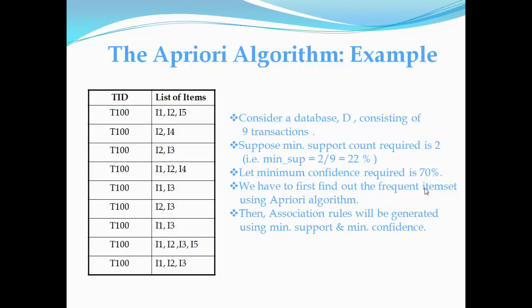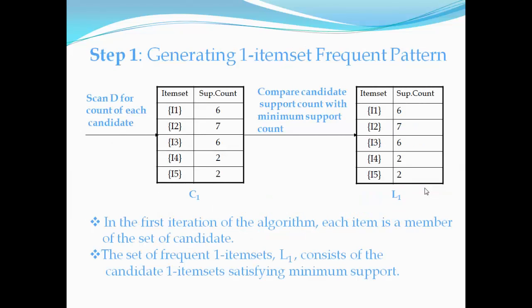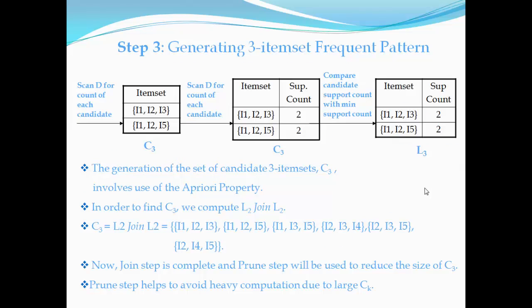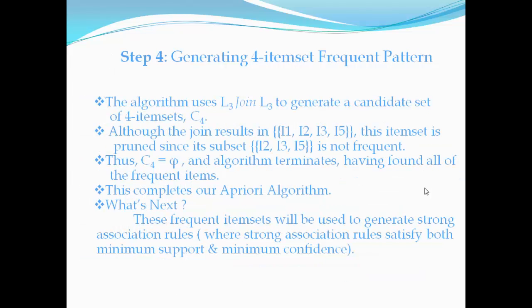Apriori algorithm as an example. As mentioned in the pseudo code, the example is being implemented of any database of any number of items. In which first frequent item is generated as shown and second frequent and then the third frequent and then the fourth frequent.